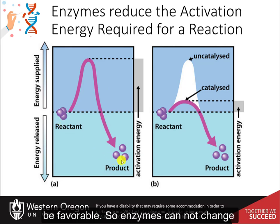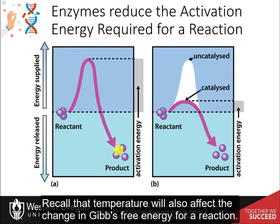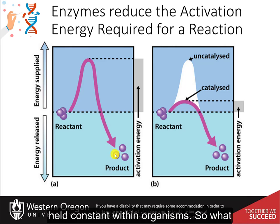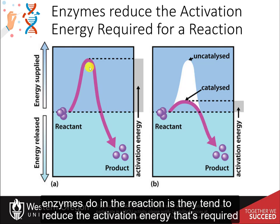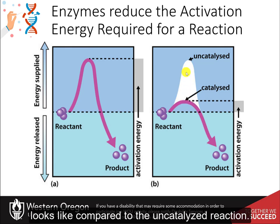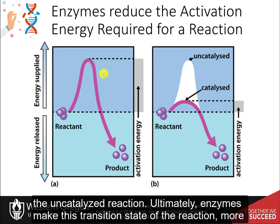Enzymes cannot change the overall change in Gibbs free energy for a reaction — that's determined by the inherent nature of the reactants and products and by their concentrations within the system. Temperature will also affect the change in Gibbs free energy, but this is usually not a factor in biological systems as temperature is predominantly held constant within organisms. What enzymes do is reduce the activation energy required to start the reaction. This second graph shows what the catalyzed reaction looks like compared to the uncatalyzed reaction — when the enzyme is present, that hurdle to start the reaction becomes much lower, making the transition state more likely to occur.